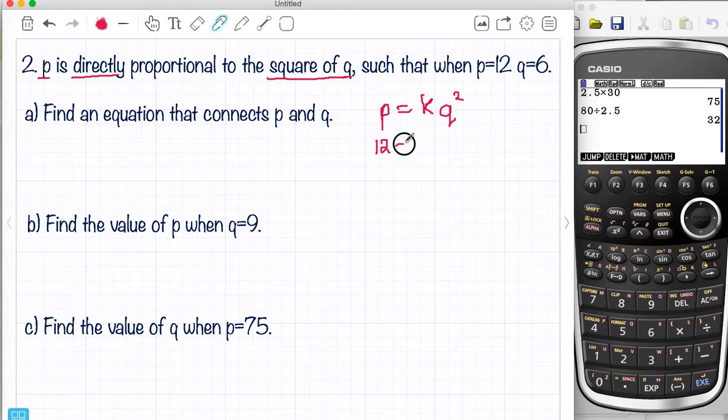So now I'm going to say that P equals 12 equals K times 6 squared, so 36. So if I divide both sides by 36, I'm going to get one-third. So remember this is 6 squared. So now I'm going to say that this is P equals one-third of Q squared. And here's my equation for the rest of the question.